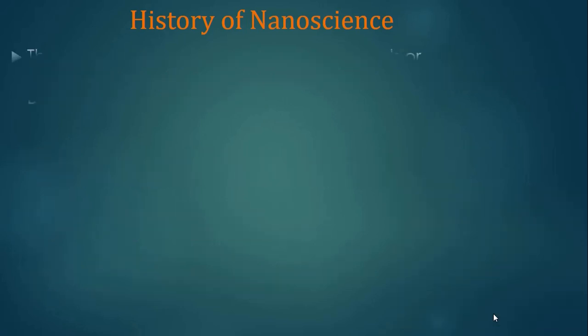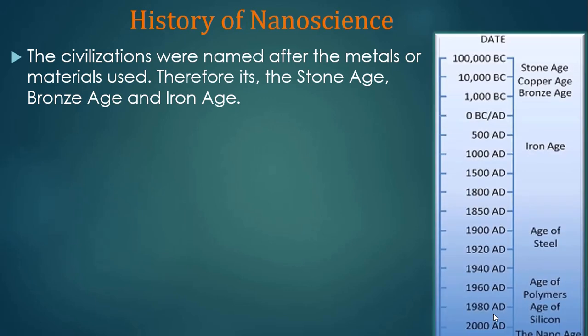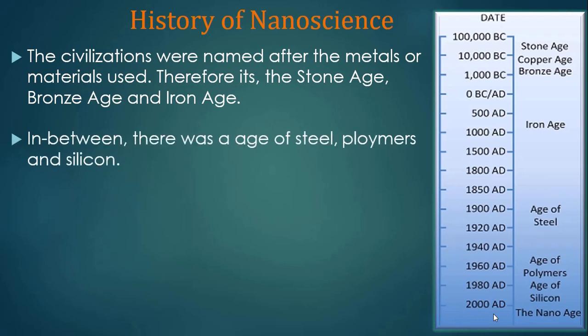Civilizations were named after the metals or materials used. The beginning was with the stone age, then the bronze age, and later the iron age. The last decades were driven by the internet and information flow — the information age. In between, there was an age of tin, polymer, and an age of silicon.